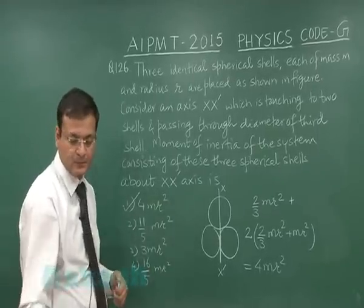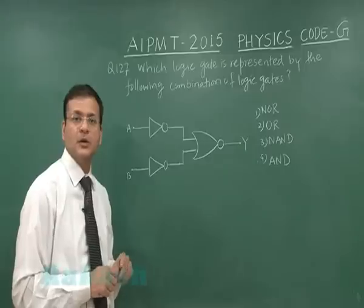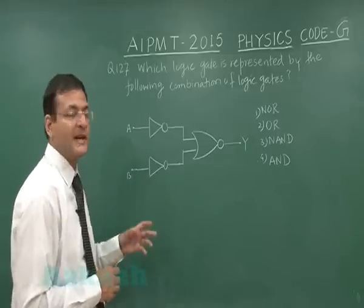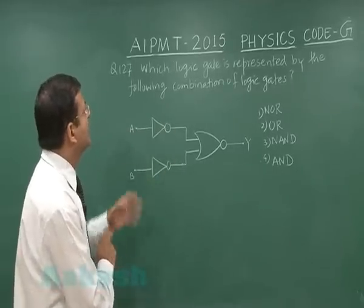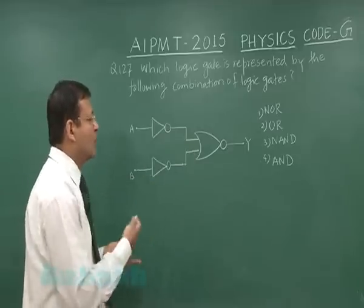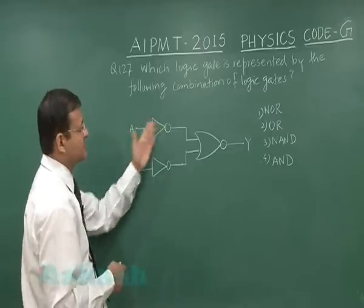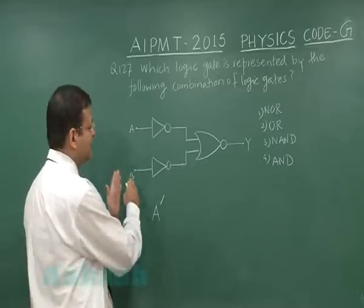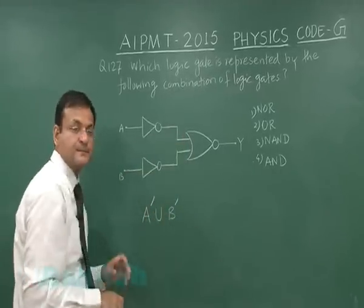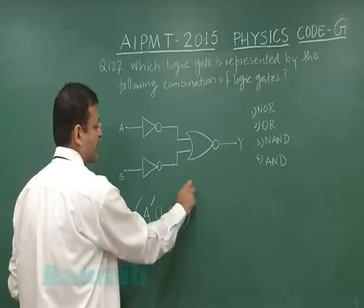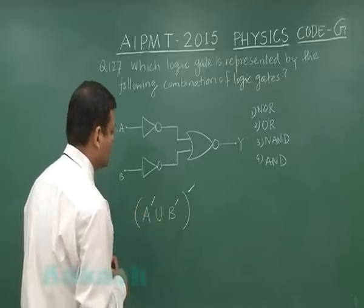Now switch over to question number 127. This question number 127, it is based on logic gates and you are supposed to identify which particular gate is the combination of such gates. Which logic gate is represented by following combination of logic gates? One way is that you start making the truth table, that will be a lengthy process. If you apply a little bit of mathematics, you can say it is first passing through NOT gate, so you are having a dash, and then b is also passing through NOT gate, that is b dash. And both of them are first getting added. Getting added means this is union, and after that you have the inverse of that because this is the NOR gate through which they are passing.